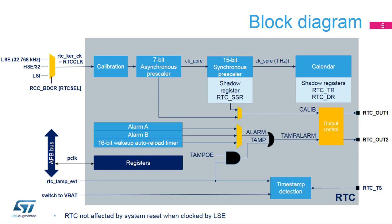The RTC clock can use either the high-speed external oscillator, or HSE, divided by 32, the low-speed external oscillator, or LSE, or the low-speed internal oscillator, or LSI. To be functional in stop or standby mode, the RTC clock must use the LSE or LSI. To be functional in shutdown or VBAT mode, the RTC clock must use the LSE.